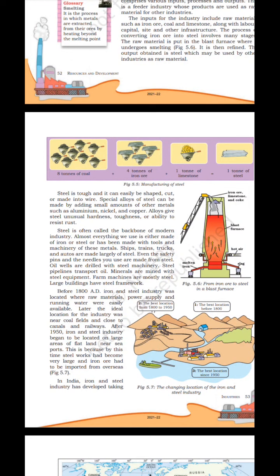Manufacturing of steel requires 8 tons of coal plus 4 tons of iron ore plus 1 ton of limestone to produce 1 ton of steel.